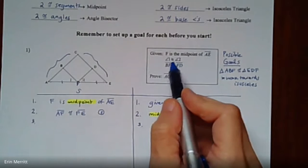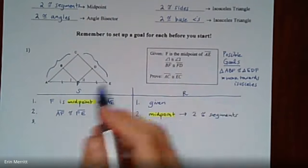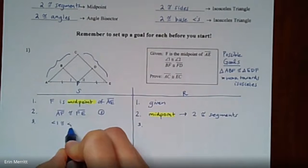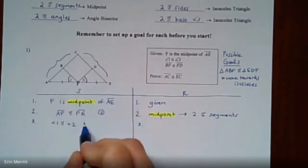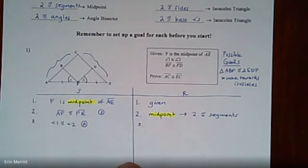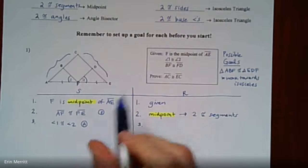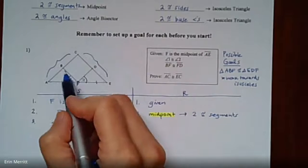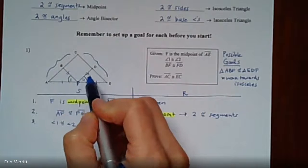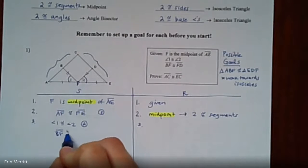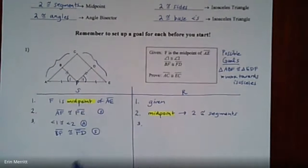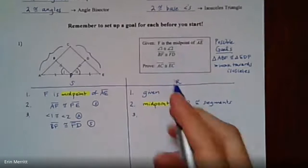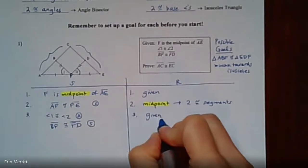The next two givens hand us more information. We have angle 1 congruent to angle 2 — mark that in the picture, that's a pair of angles in the triangles. And BF is congruent to FD — BF is this segment and FD is that segment — that's a pair of sides in those triangles. So it's a pretty good guess that this is going to work out for us.